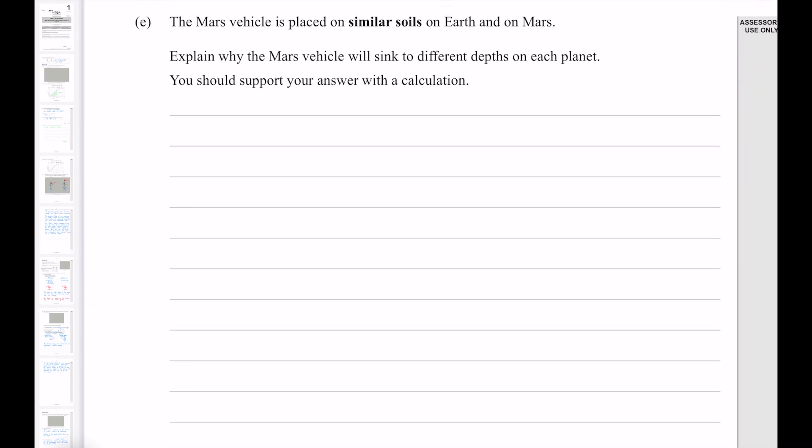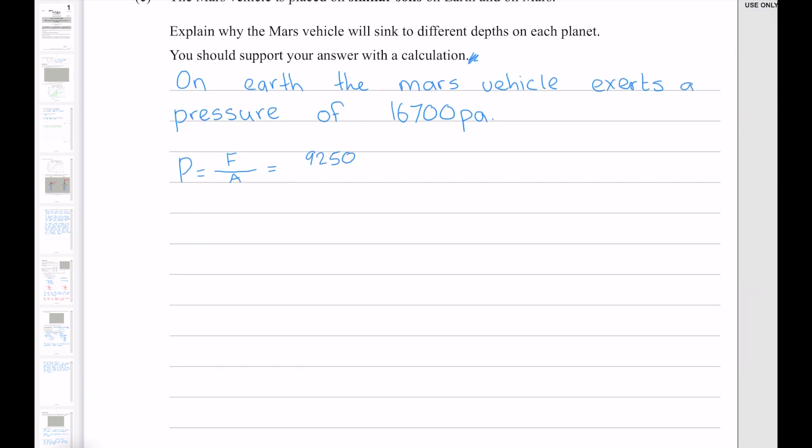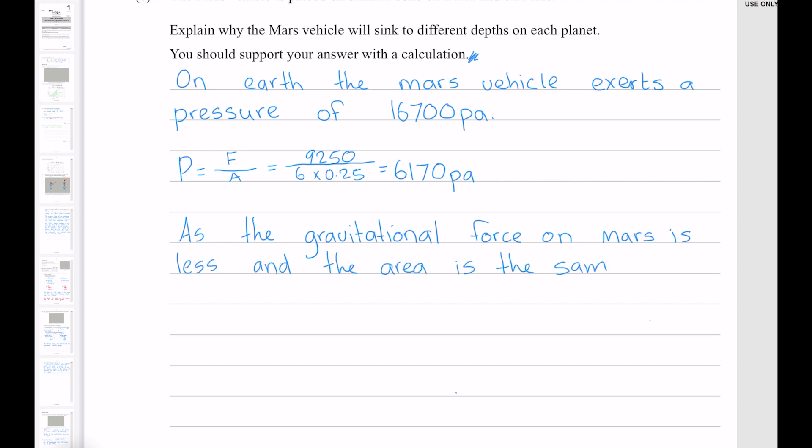The Mars vehicle is placed on similar soils on Earth and on Mars. Explain why the Mars vehicle will sink to different depths on each planet. You should support your answer with a calculation. So first of all, from our previous question, we know that on Earth, the Mars vehicle exerts a pressure of 16,700 pascals. Now since we're clued in that we need to make a calculation, the calculation we need to make for comparison is the pressure on Mars. The force on Mars was 9,250. And our area is the same. Which gives me 6166.66666, which I'll round up to 6,170. Which tells us that as the gravitational force on Mars is less and the area is the same, there is less pressure on the soil. This means the rover will sink less on Mars.